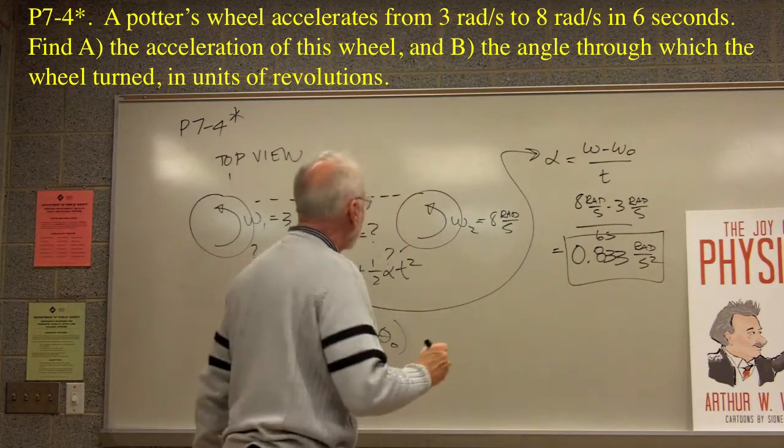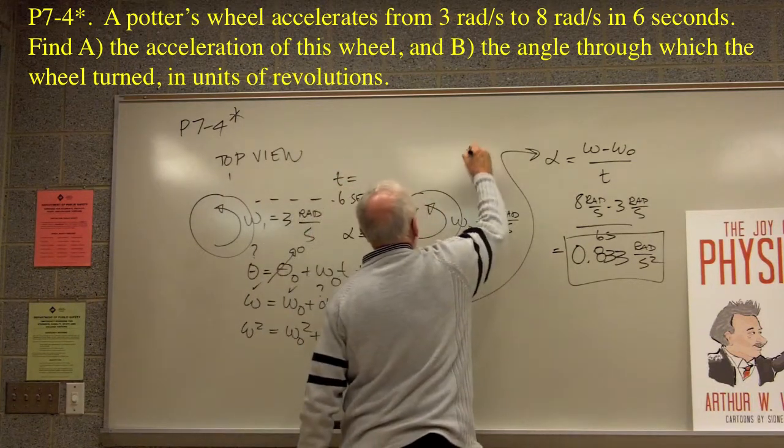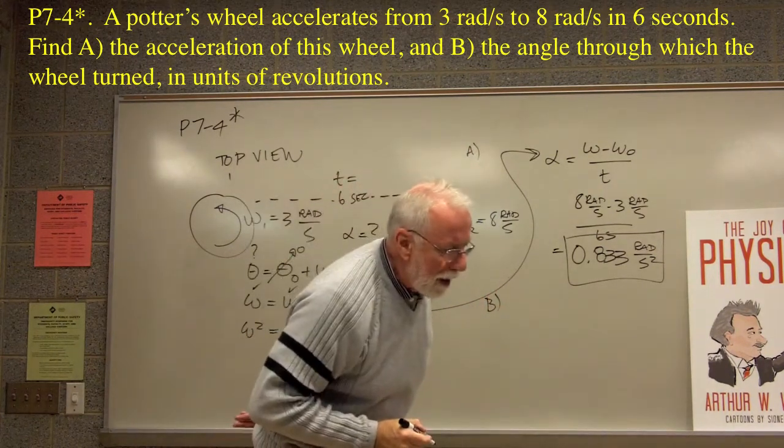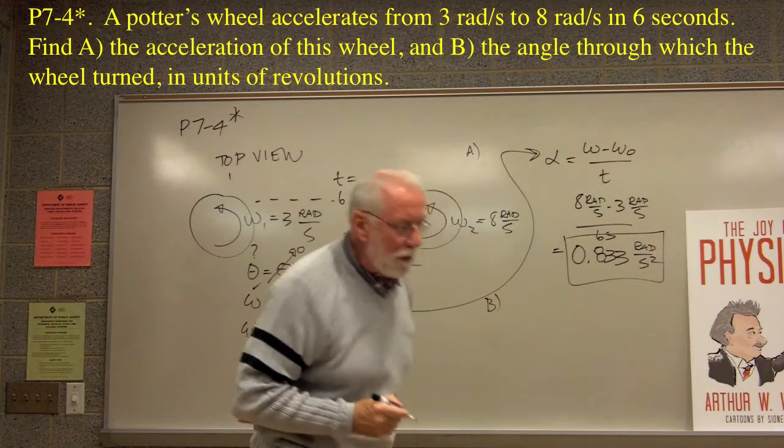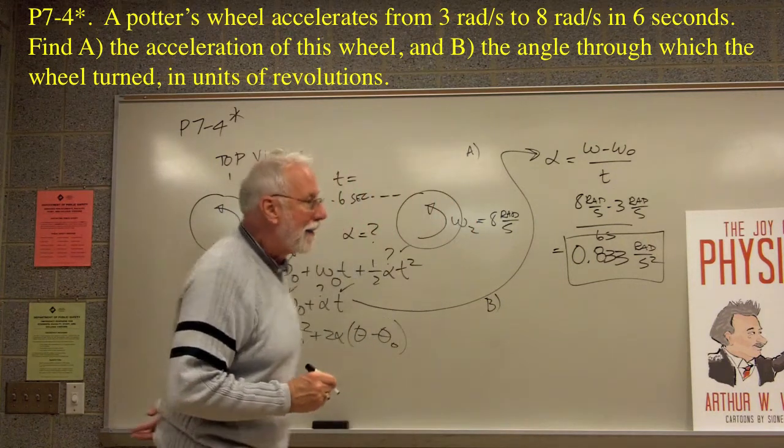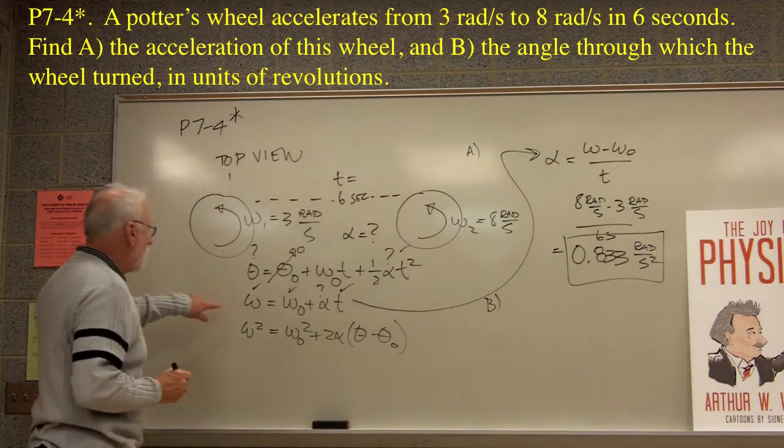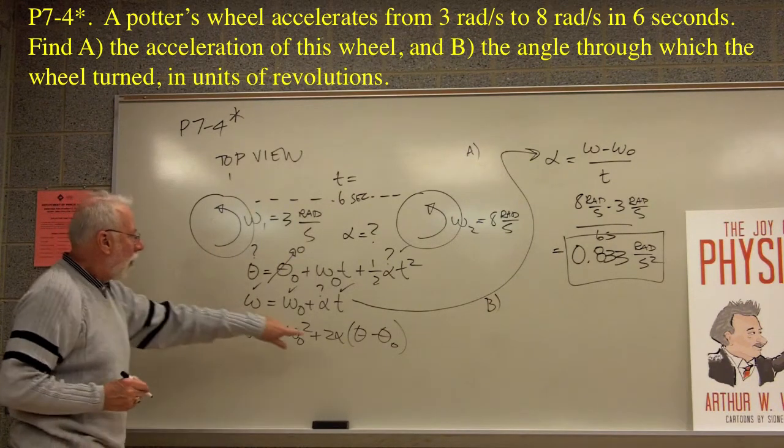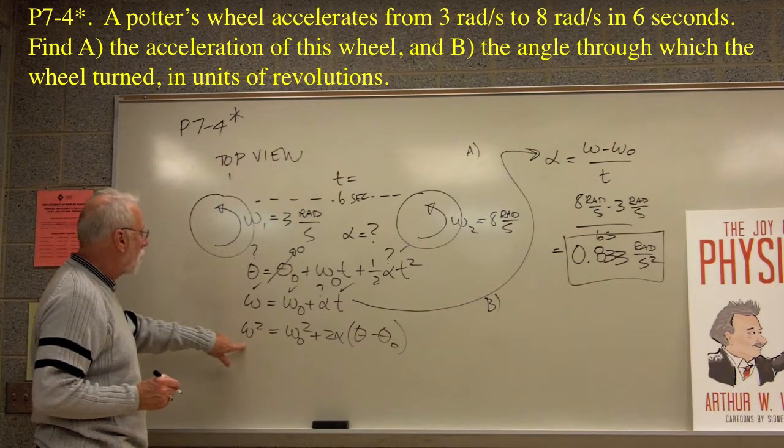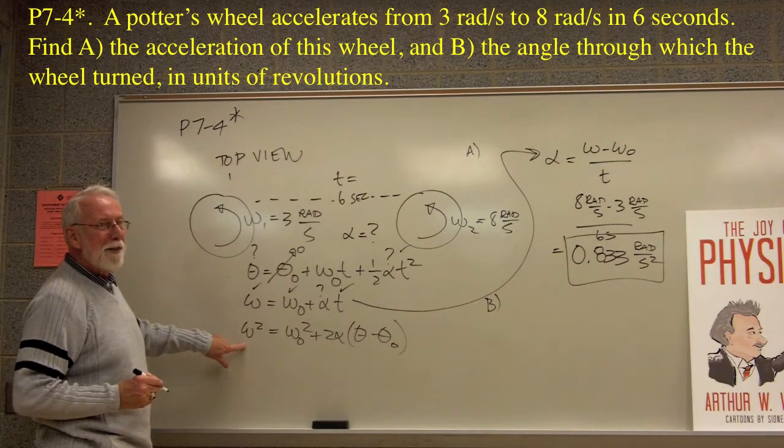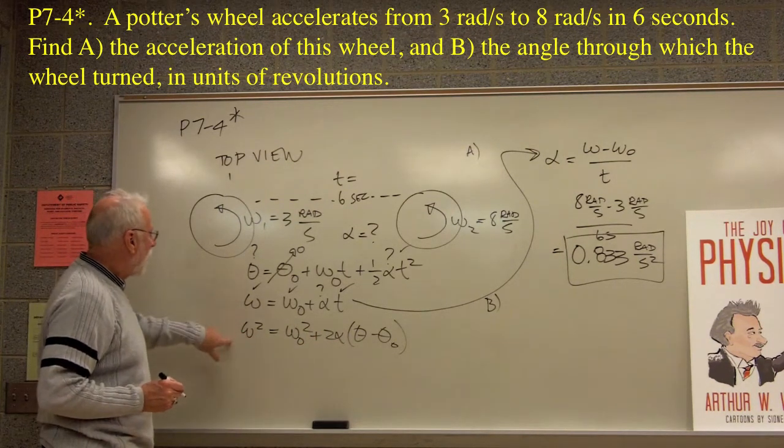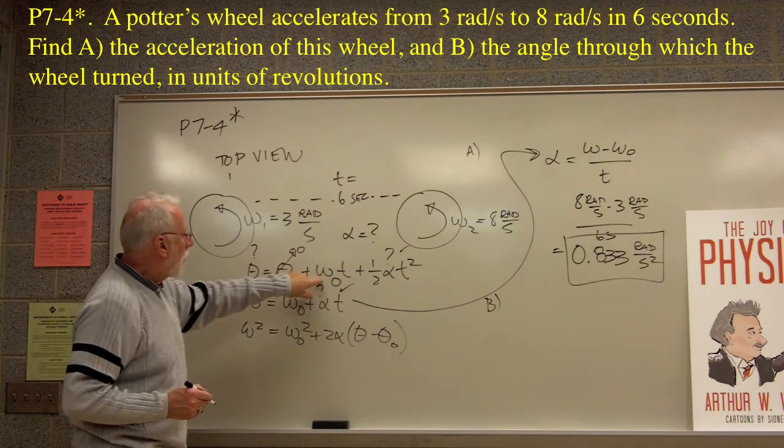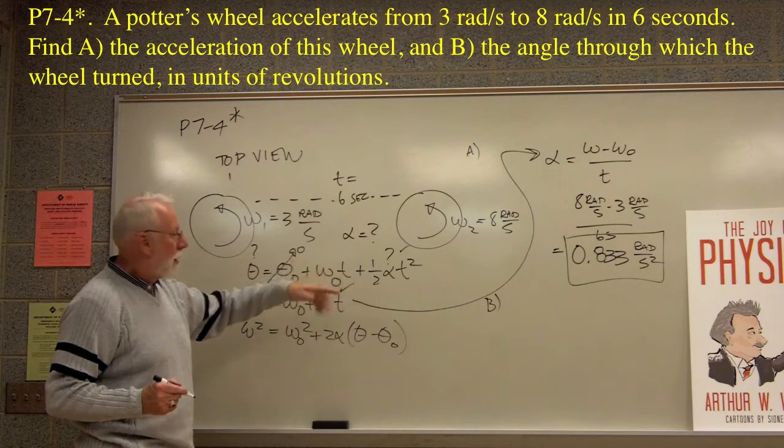B part. See, just when you think it's safe, there's always a B part to something, isn't it? Okay, B part wants to know the angle through which the wheel turns in units of revolution. Angle. Ah. So now we're going to have to use one or the other of these equations because they have theta in it. That's what we want. Which one can we use? Doesn't really matter very much, does it? Because they both have the theta, which we want to know, the omegas, which we do know, and the alpha. So let's use the first one. It's handy.